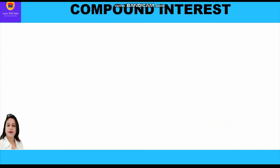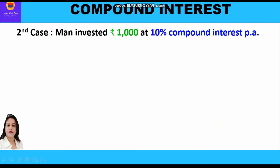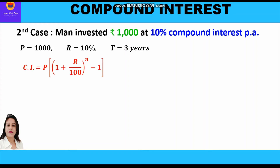Now let's solve the second case where the man invested rupees 1000 at 10% compound interest per annum. Principal is rupees 1000, rate of interest is 10%, time period is three years. The compound interest formula is CI = P × [(1 + R/100)^n − 1]. Putting in the values: 1000 × [(1 + 10/100)^3 − 1], which gives 1000 × [(11/10)^3 − 1].